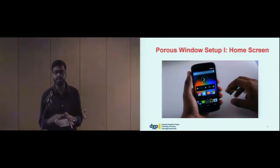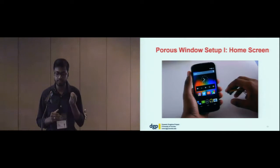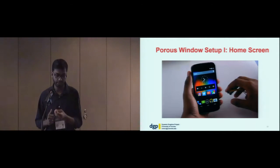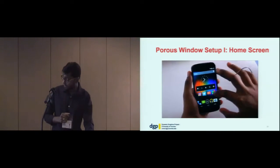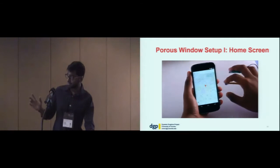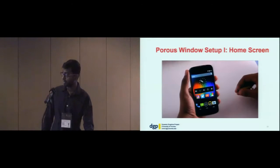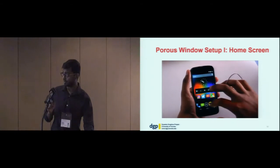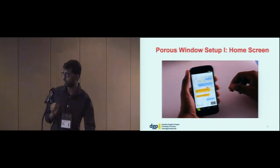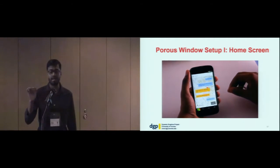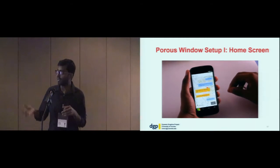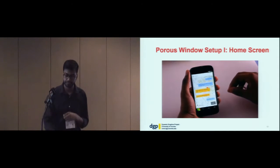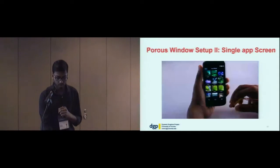For window setup from the home screen: the existing use is reserved — the index finger just opens one single app. To open two apps, the user selects the first app with the middle finger, and the system waits for the second selection with the index finger, then opens the two apps together.